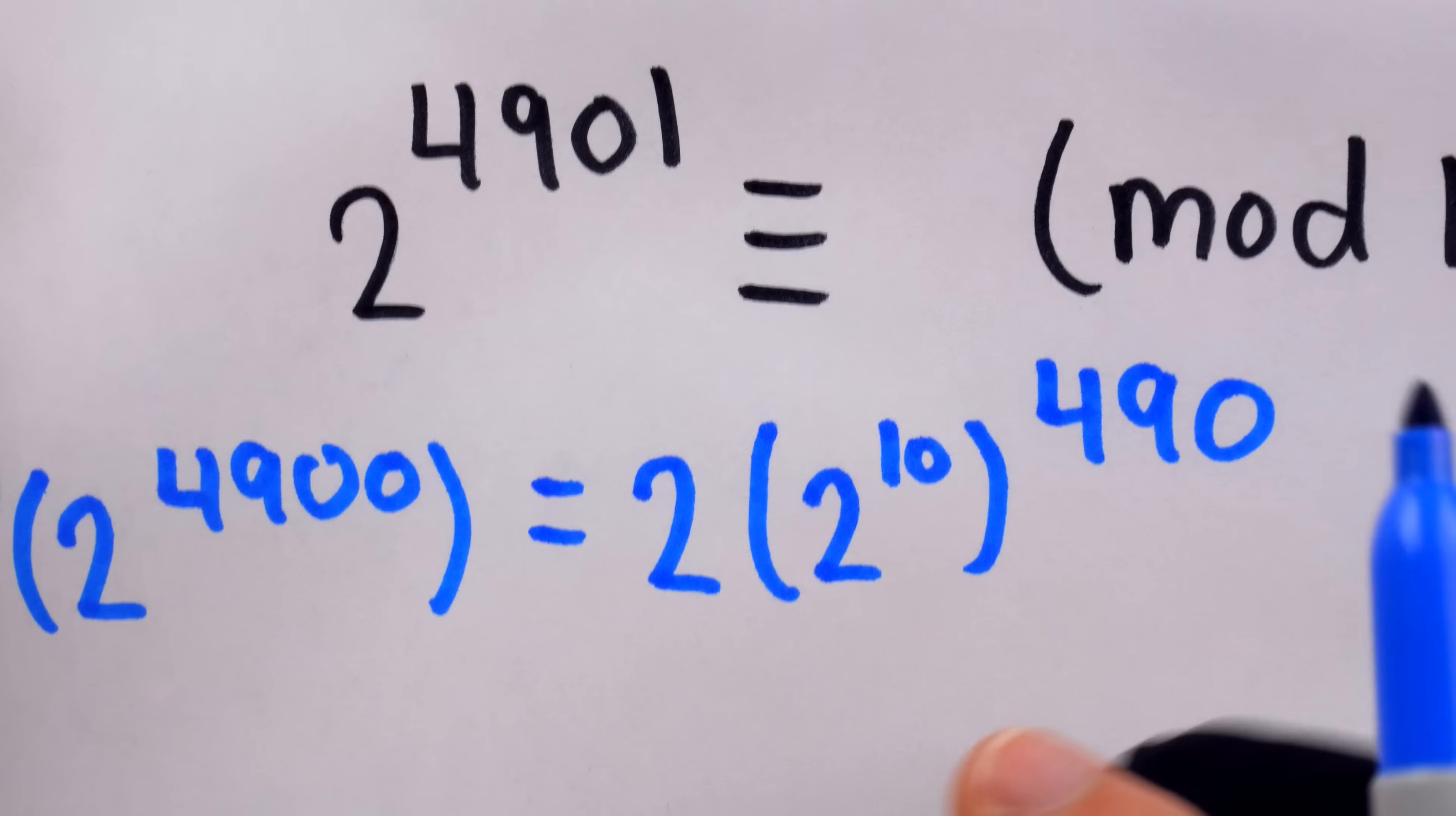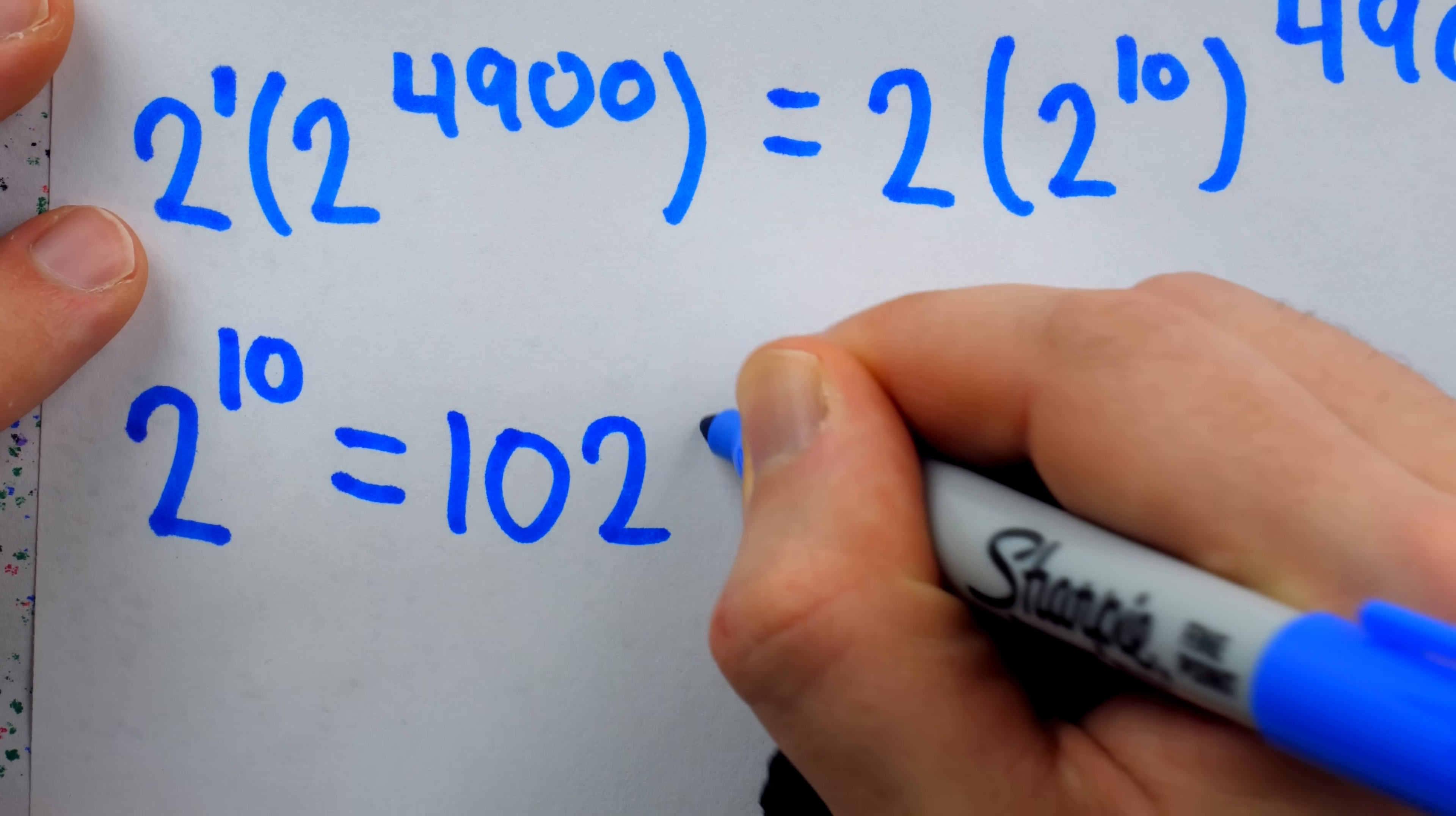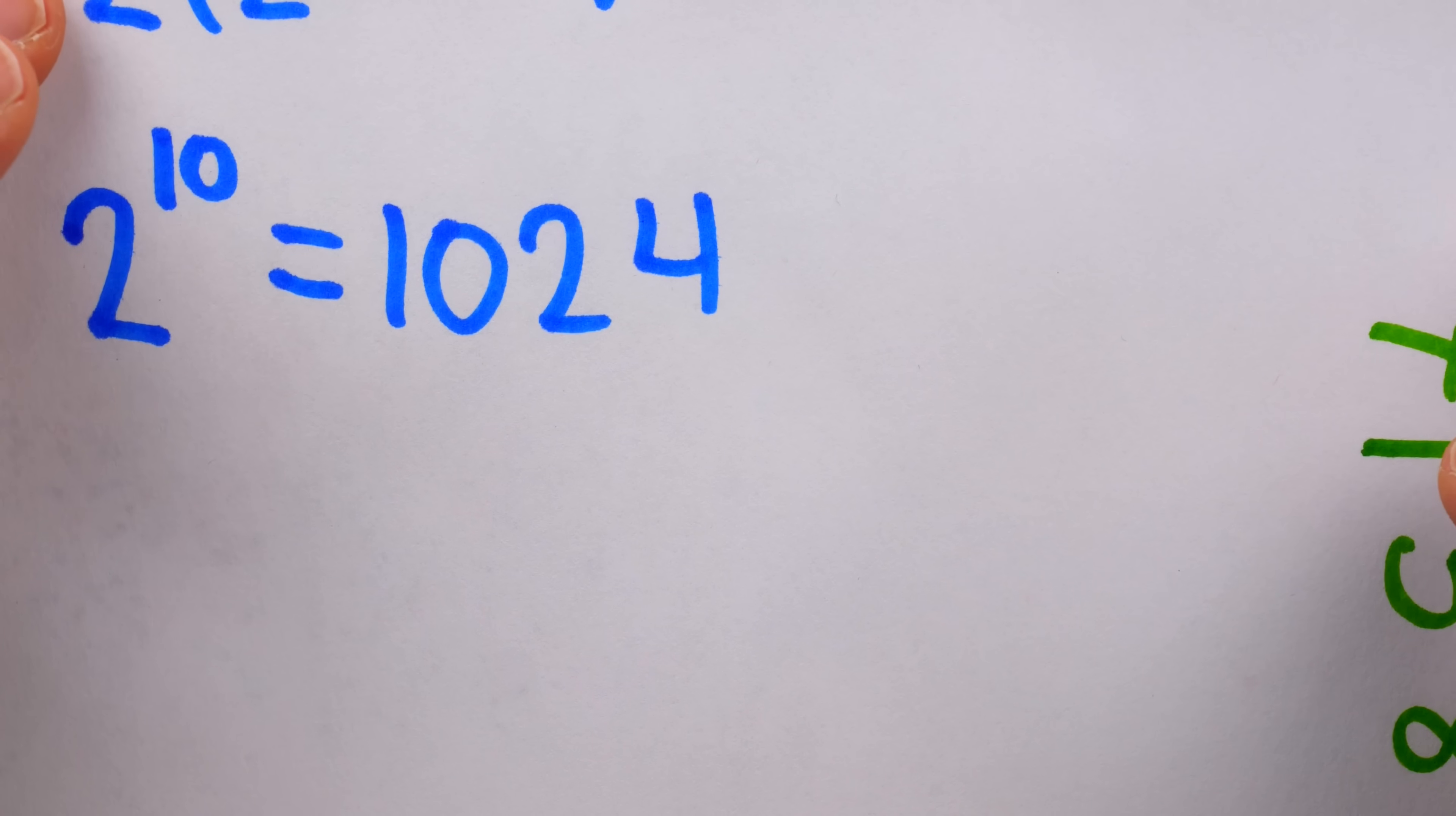Now, 2 to the 10 is in fact something we can deal with, whether you want to use a calculator, or paper and pencil, or your head. I would just recognize that 2 to the 10 is 2 to the 5 squared. 2 to the 5 is 32, and I happen to know that 32 squared is 1024. So this guy here is 1024. So what we're going to do is figure out what the remainder is when this, 1024, is divided by 11. And then we can basically just plug that in here, and from there we can raise it to the power of 490, multiply it by 2, and get the answer to our question. Let's see how this works out.